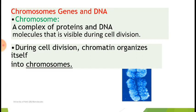A chromosome is a complex of proteins and DNA molecules that is visible during cell division. During cell division, chromatin organizes itself into chromosomes. Chromatin material is a thread-like structure present in the initial stages. When the cell enters the dividing phase, the chromatin material condenses — meaning it decreases in length and forms a more compact structure.